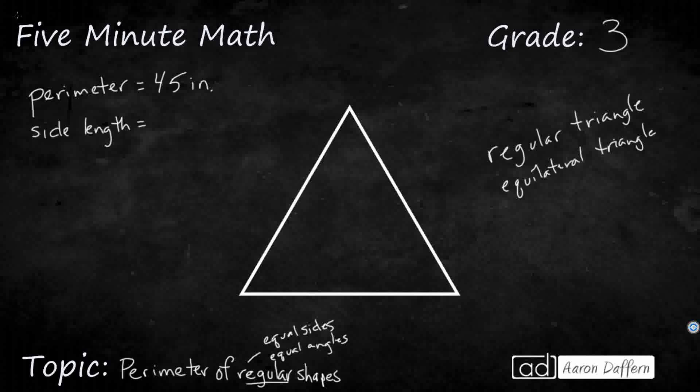So let's look at how we can find the perimeter of this regular triangle, or this equilateral triangle. We know the perimeter is going to be all three sides — this is a three-sided shape. So the perimeter here is going to be the side plus the side plus the side. That's how you find any perimeter — you just add up all the sides.